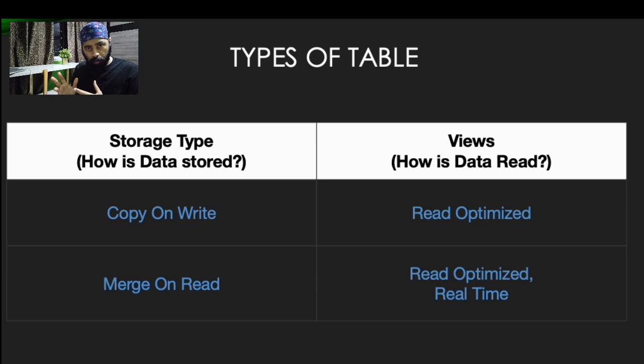Now, how exactly does Hoodie overlay all of this? When you read data from the lake, you either create Hive tables or read files directly — all data is stored in a file format like S3 or HDFS. When updates come in, Hoodie handles tracking and applying those updates. Based on your use case, Hoodie provides two types of storage: Copy on Write and Merge on Read.